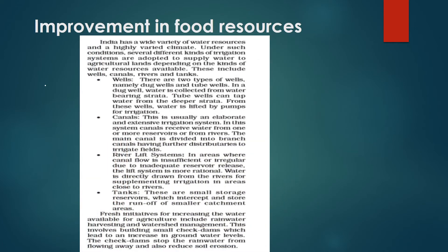India has a wide variety of water resources and a highly varied climate. Under such conditions, several different kinds of irrigation systems are adapted to supply water to agricultural lands depending on the kinds of water resources available. These water resources include wells, canals, rivers, and tanks.